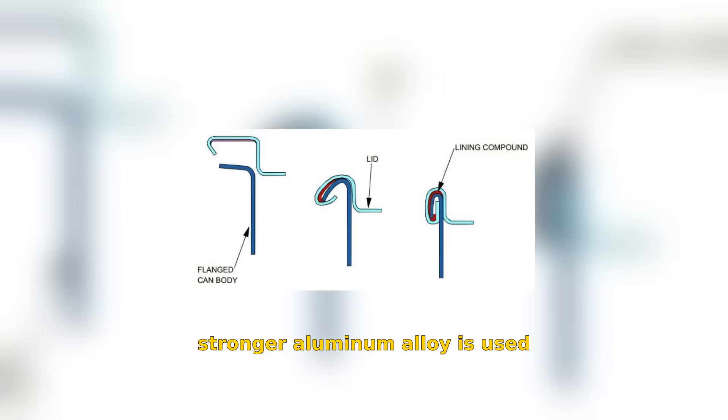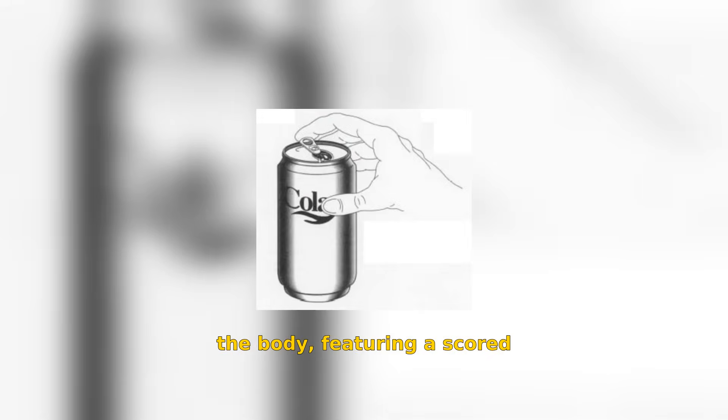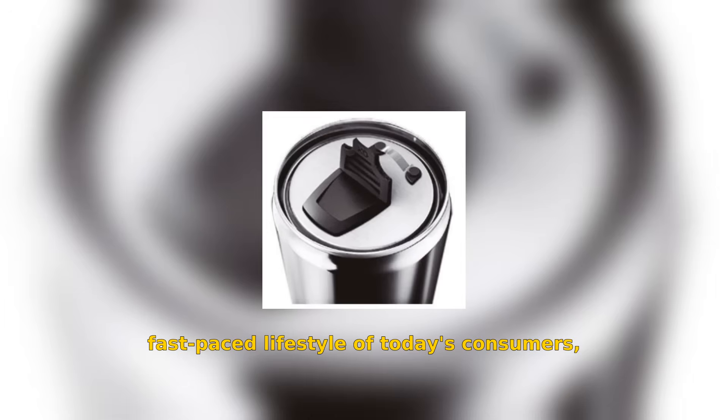A stronger aluminum alloy is used for the lid compared to the body, featuring a scored opening for user convenience, even with one hand. The new can design caters to the fast-paced lifestyle of today's consumers, bridging traditional formats with modern needs for portability.